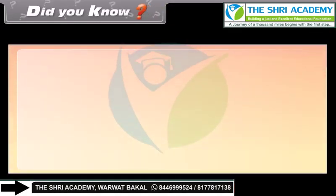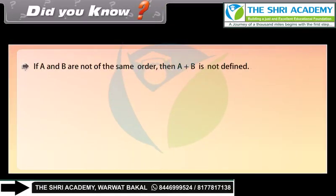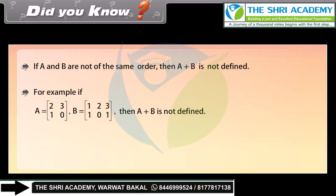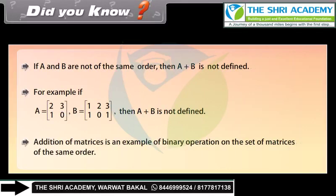Did you know: if A and B are not of the same order, then A plus B is not defined. For example, if A equals [2, 3; 1, 0] (2 by 2) and B equals [1, 2, 3; 1, 0, 1] (2 by 3), then A plus B is not defined. Addition of matrices is an example of a binary operation on the set of matrices of the same order.